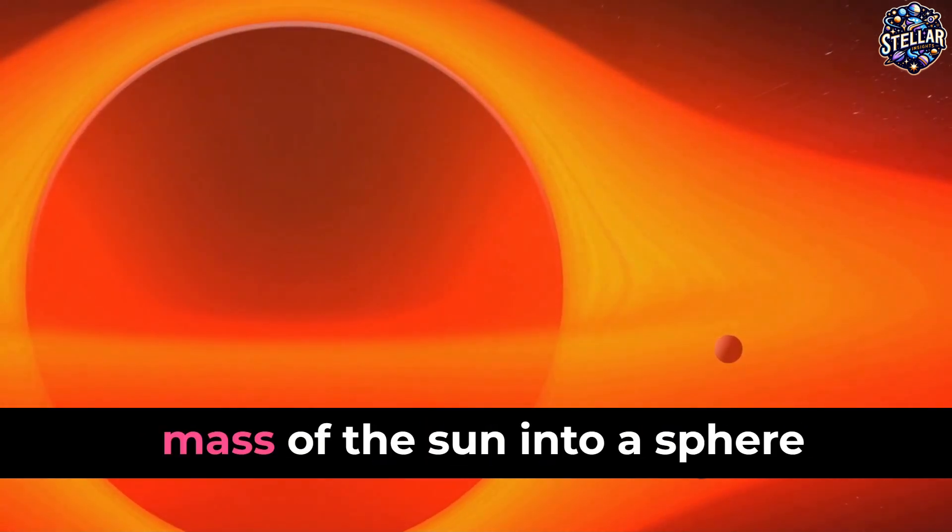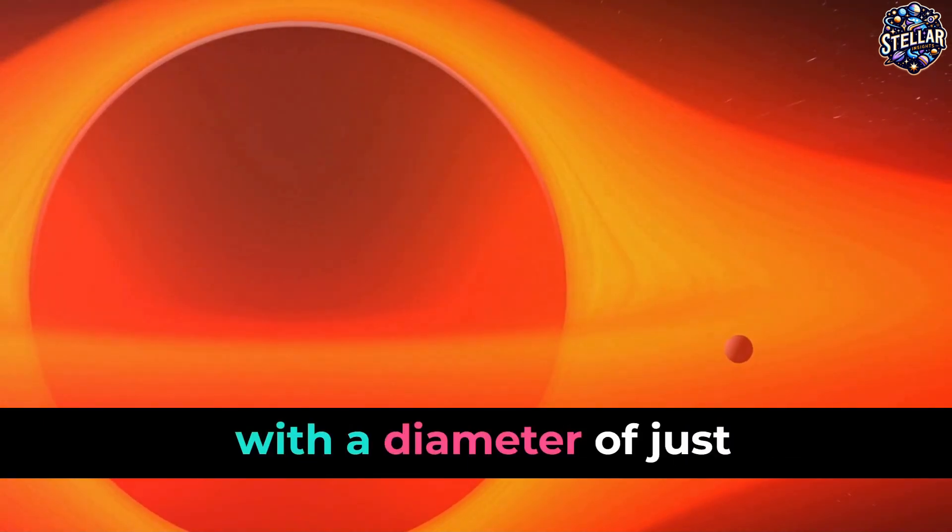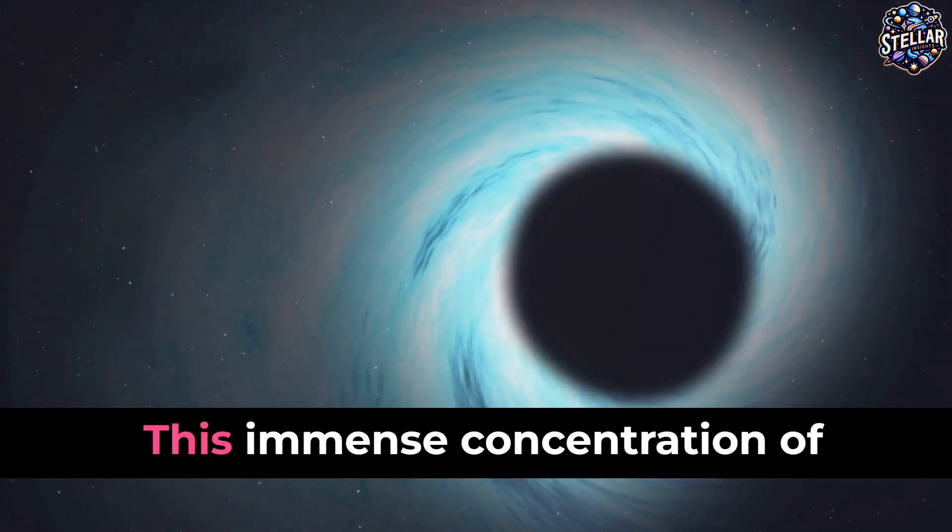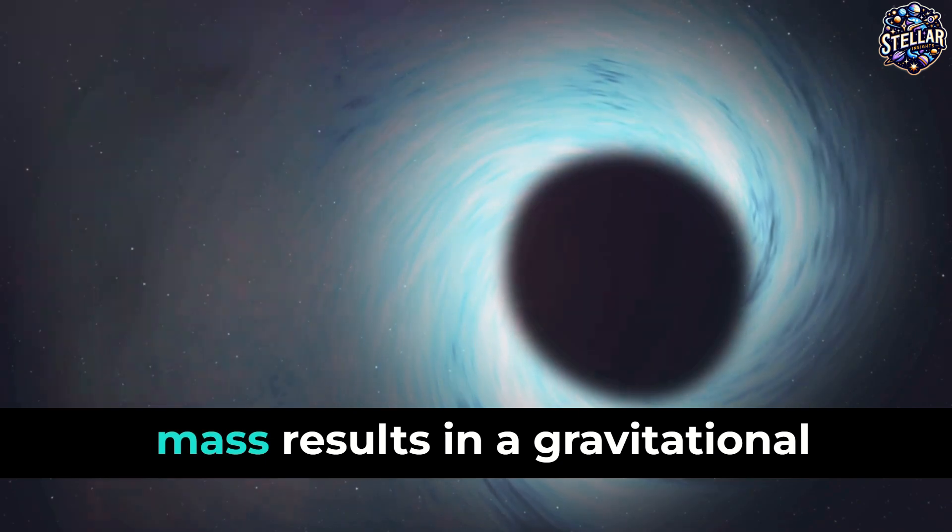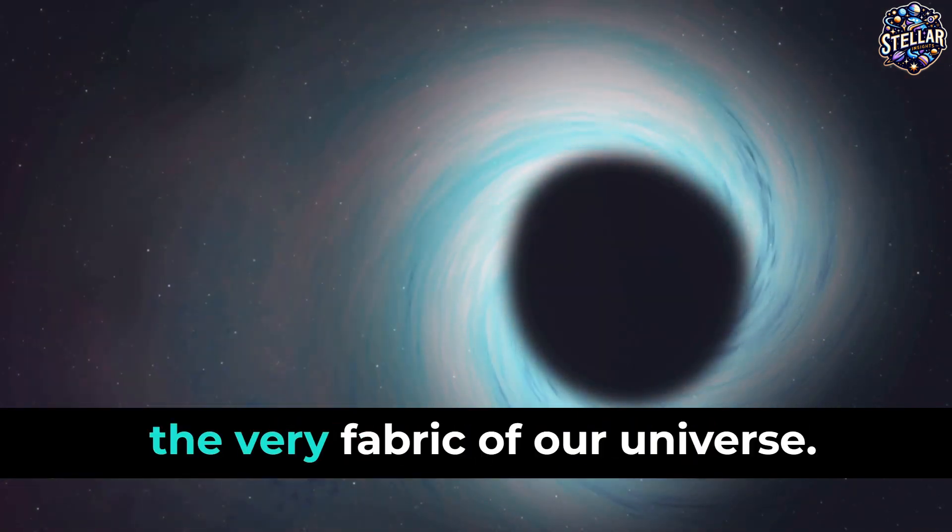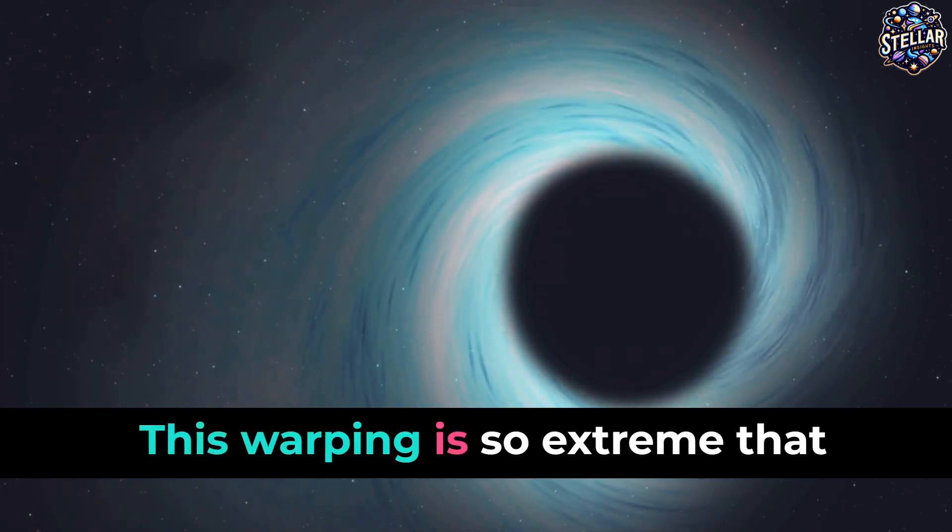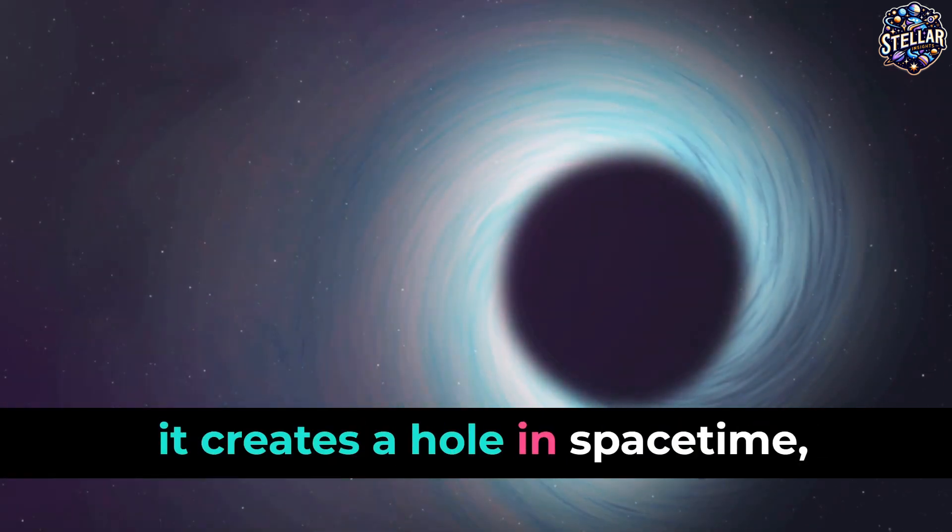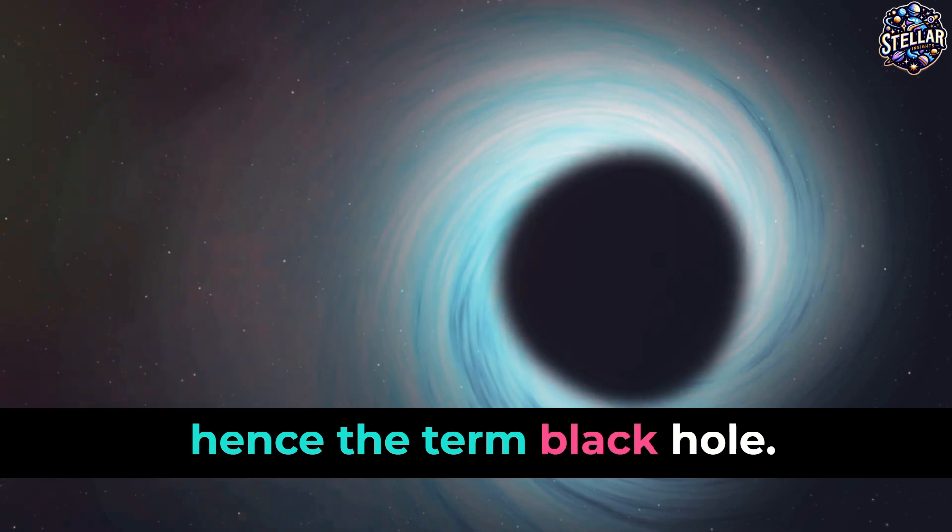The gravity here is so powerful due to an incredibly high mass concentrated into an extremely tiny space. It's like trying to pack all the mass of the sun into a sphere with a diameter of just three kilometers. This immense concentration of mass results in a gravitational field so strong that it warps spacetime, the very fabric of our universe. This warping is so extreme that it creates a hole in spacetime, hence the term black hole.